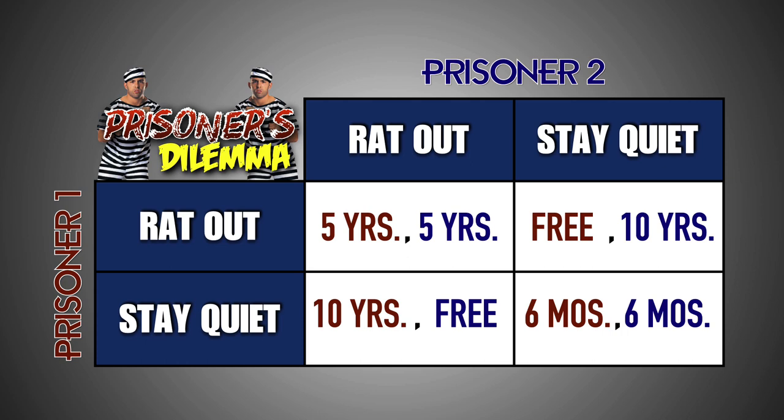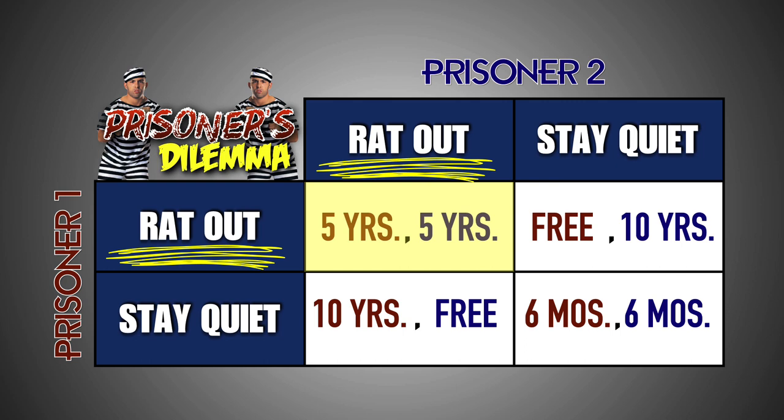Considering that both prisoners are unaware of each other's payoffs and they are unable to collude, what will be the outcome of this game? Each player will choose the strategy that is capable of giving them the most desired payoff. Both prisoners will rat out the other, and both prisoners will receive 5 years in jail. Realizing that they can go free and escape jail if they implicate their accomplice, both prisoners will blame each other for the crime. By doing so, they will both implicate each other, giving the police the evidence they need to put them in jail for 5 years.